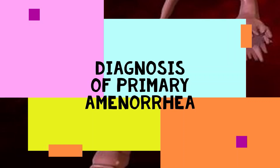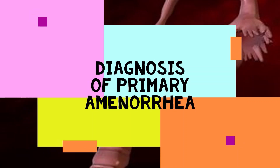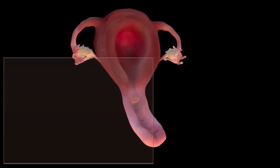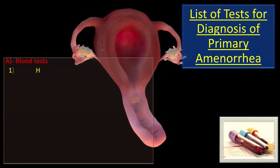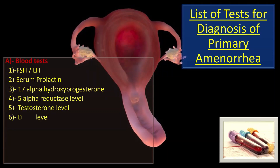Today we will talk about the diagnosis of primary amenorrhea. The tests include blood tests such as FSH and LH levels, serum prolactin, 17-alpha hydroxyprogesterone level, 5-alpha reductase level, testosterone level, and dehydroepiandrosterone (DHEA) level.